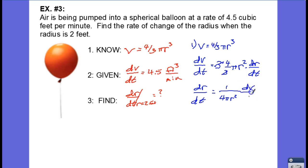And so finally dr/dt evaluated at r equals 2 gives us 1 over 4 pi times 2 squared times dV/dt which is 4.5, and I would do this on the calculator and when we simplify this we end up with 4.5 divided by 16 pi and that is approximately 0.0895 feet per second.